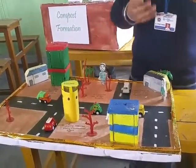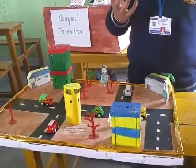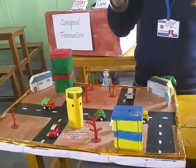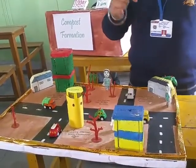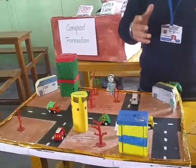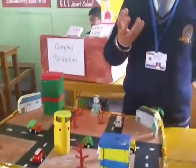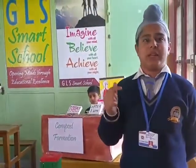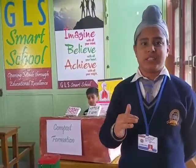जैसे कि हमें पता है, जो एक ozone layer होती है, जो हमें sun की harmful rays से बचाती है, वो हमारे इतना pollution बढ़ गया कि उसमें भी एक hole हो गया, जिसकी वजह से जो air pollution है वो नीचे आ रहा है।